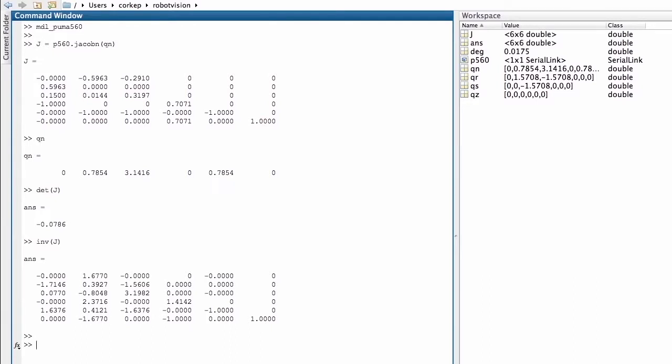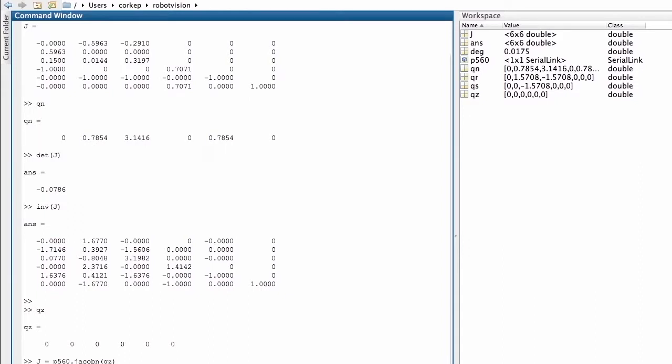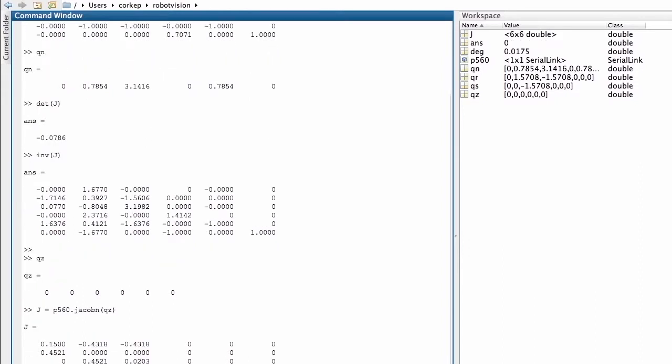If we consider a different joint angle configuration, I'm going to look at the joint configuration Q0, which is where all the joint angles are equal to zero. If I compute the Jacobian here and pass in QZ, we can see this is what the Jacobian looks like and the determinant in this particular case is equal to zero.